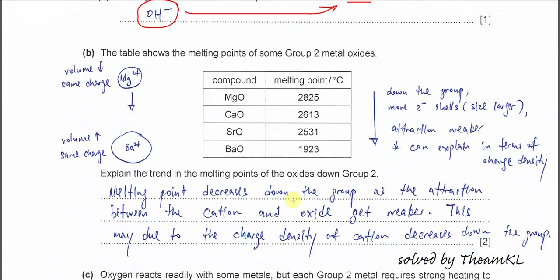Part B: this table shows that the melting point of magnesium oxide is the highest, and going down the group, the melting point decreases. This is the trend. Why does it decrease going down the group? It's because of charge density. You can explain this part using charge density.